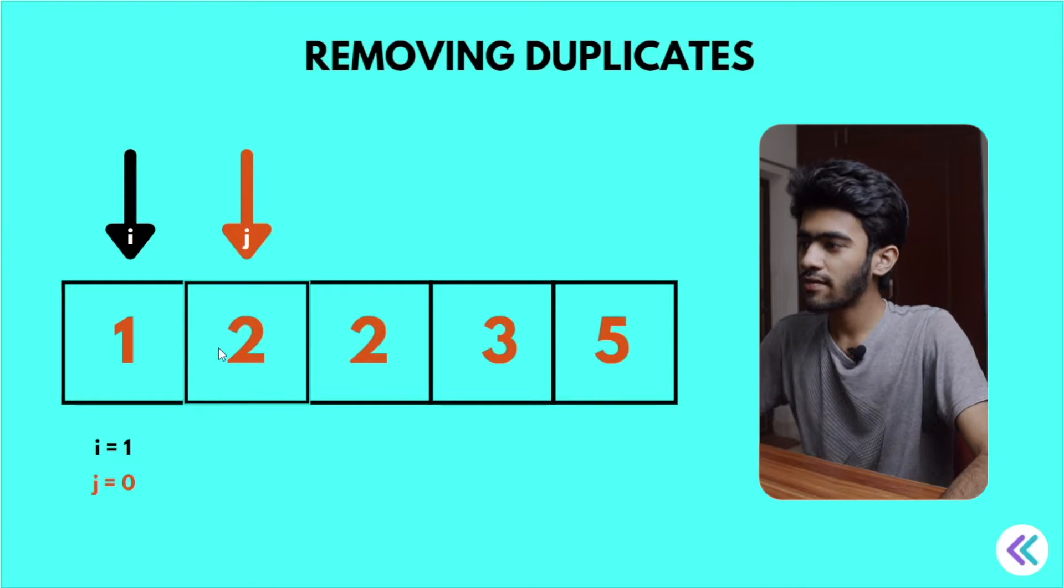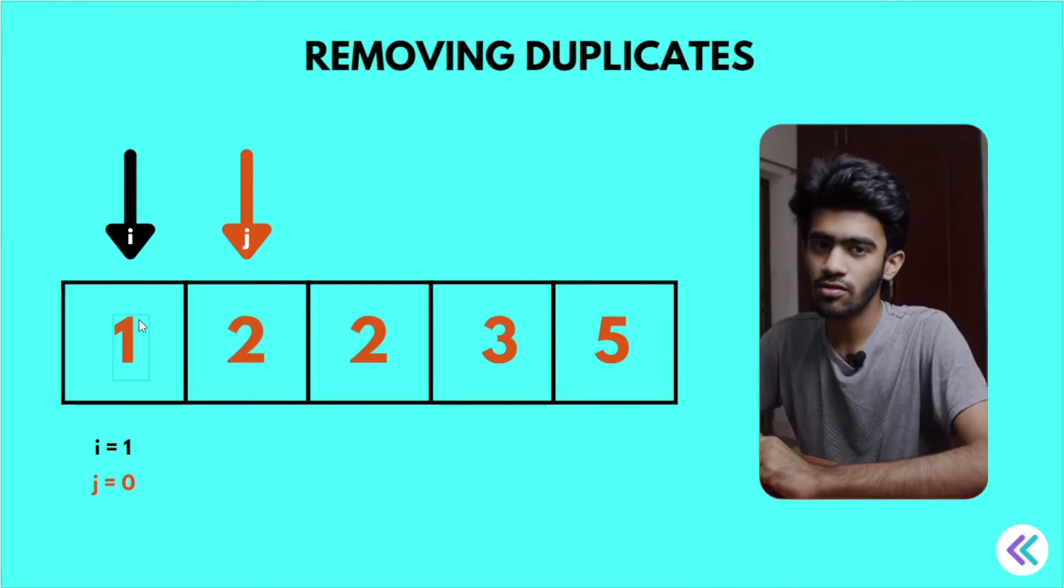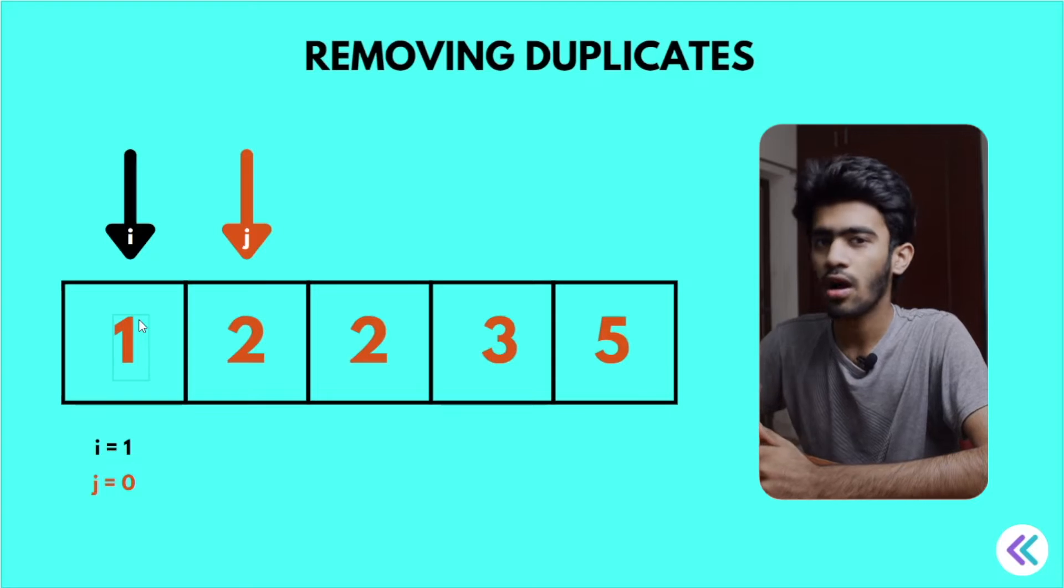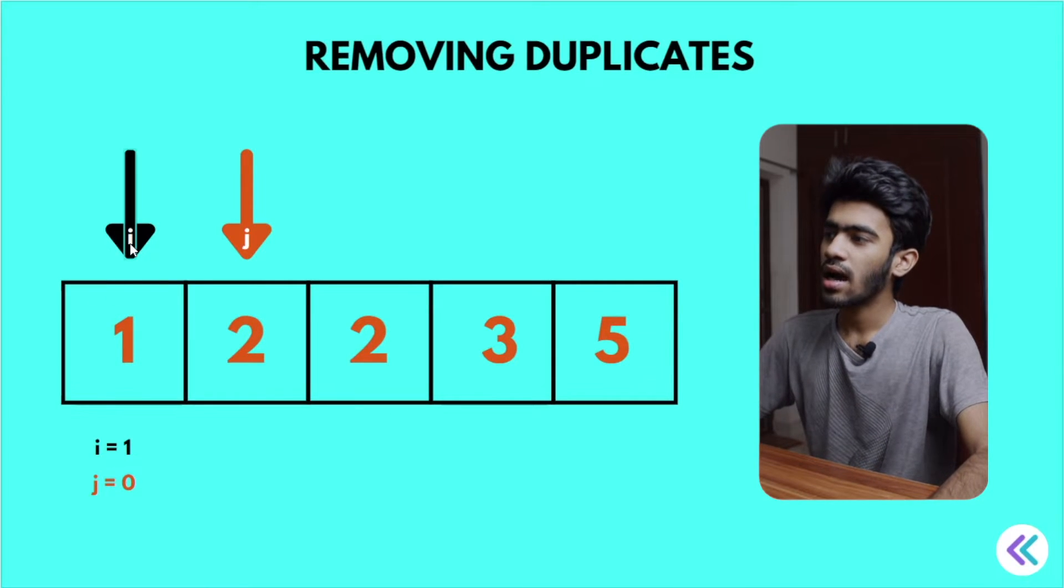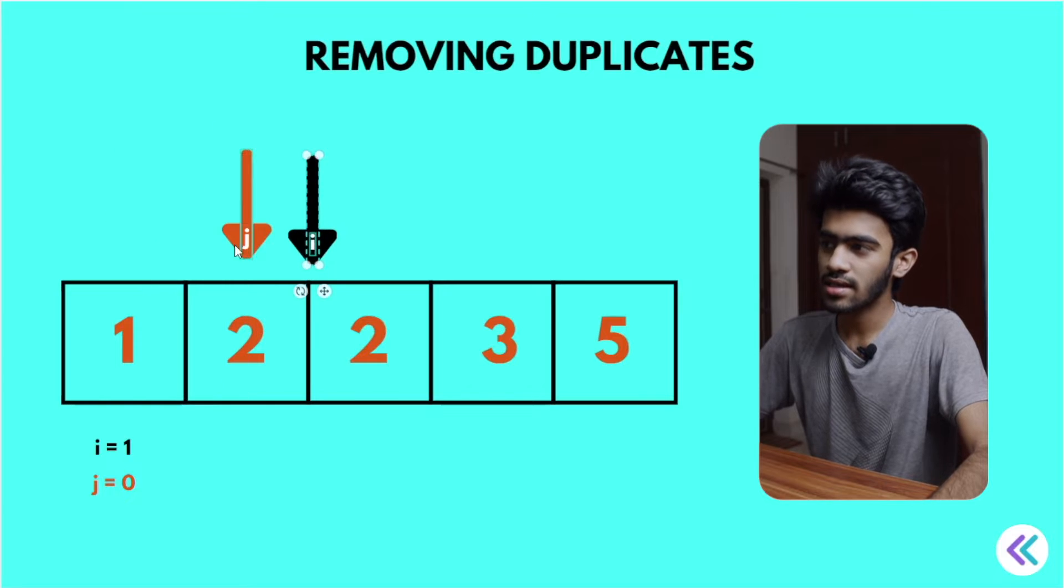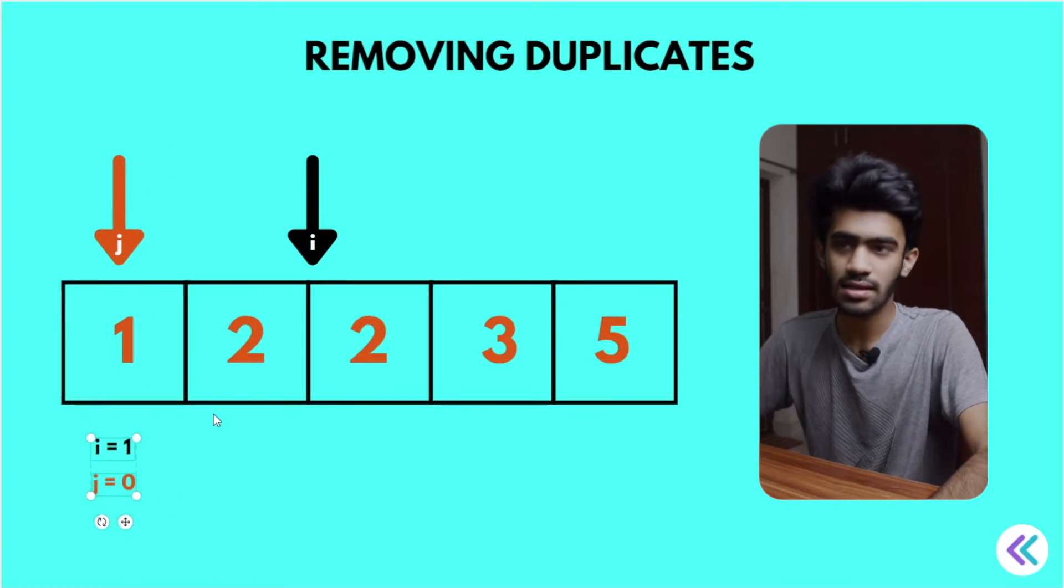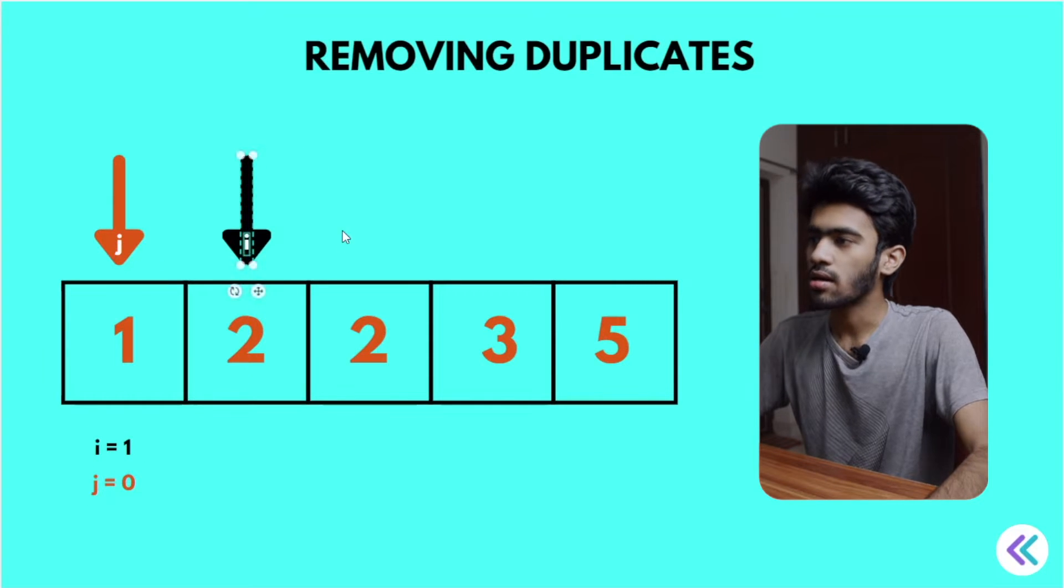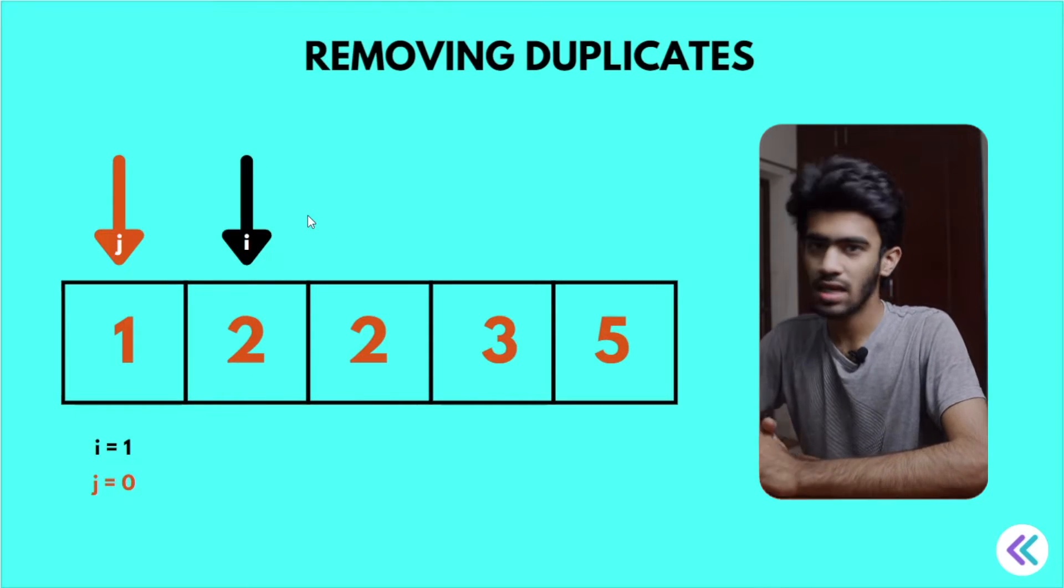So in this question, let's use two pointers, one i and one j. First, i is in the first index and j is in the 0th index. As given here, i is in the first index and j is in the 0th index.